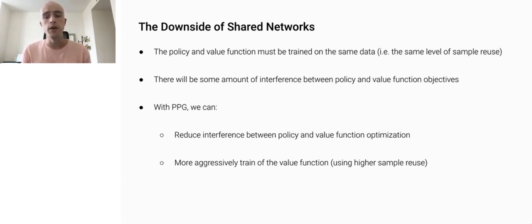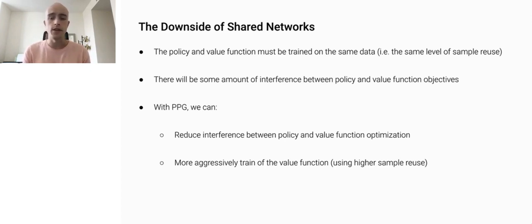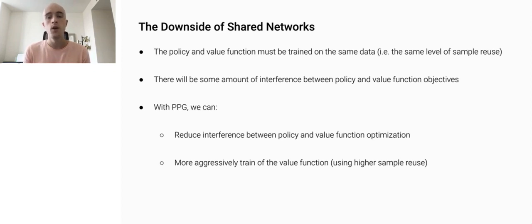Second, when we use shared networks, we know there will be some amount of interference between the policy and the value function objectives. In PPO, we control the relative weight of each objective with a well-chosen hyperparameter. But ideally, we wouldn't have to make this tradeoff. We'd like to train the policy purely from the policy gradient. With PPG, we can address both of these concerns. We can reduce interference between policy and value function optimization, and we can more aggressively train the value function with a higher level of sample reuse.